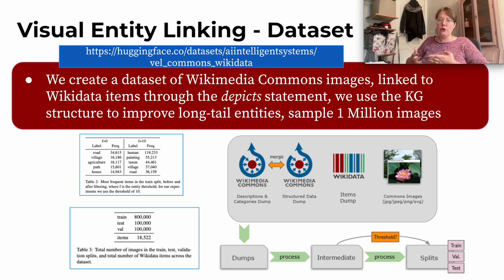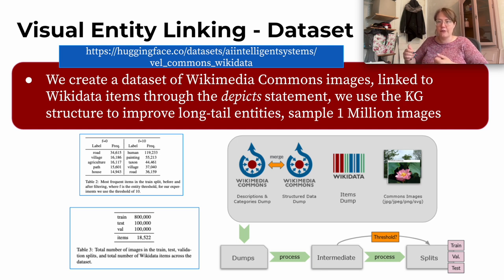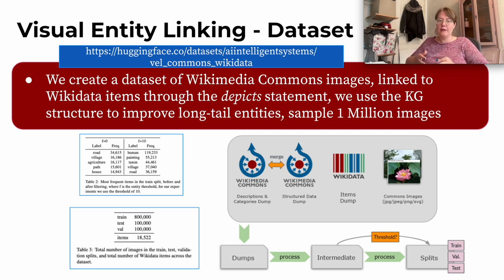We use knowledge graph structure to improve long-tail entities. One of the things we found is that there are a lot of entities and a lot of images, and a lot of Wikidata items linked. The details are in the paper, but we use the knowledge graph structure to reduce the number of entities. We sample one million images from the entirety of Wikimedia Commons, and that dataset is now available.